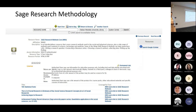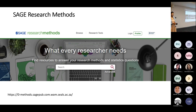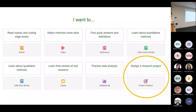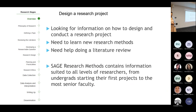The Sage Research Methods database is one I wanted to focus on because it's very important. It takes you from the very beginning of your research journey. Once you get to the screen, you will see Sage Research Methods and 'Design a Research Project.' If you click there, you will see it has an overview. If you're looking for information on how to design or conduct a particular research project, the research methods you can use, or how to conduct your literature review, you can find all of that information there.